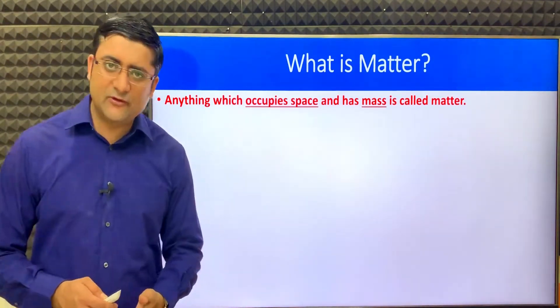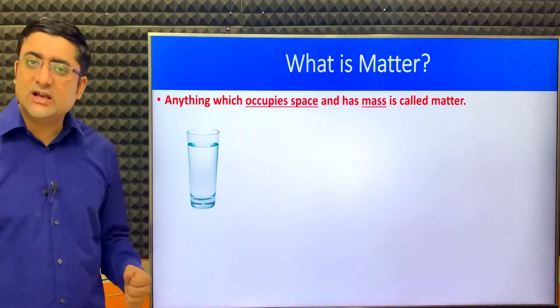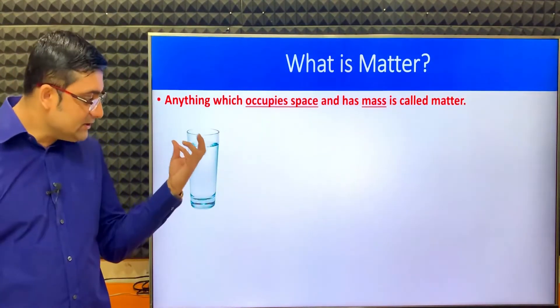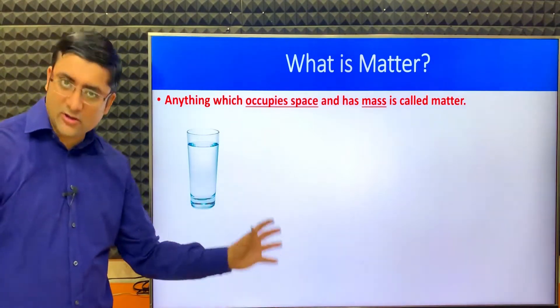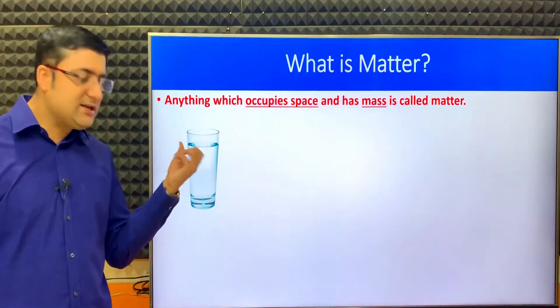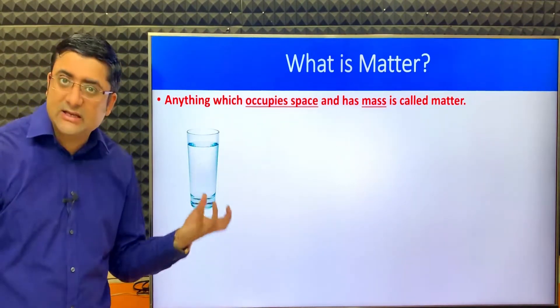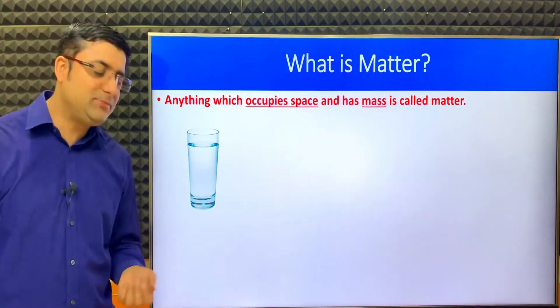Let's understand this with the help of a few examples. This over here is a glass of water. Does it occupy space? Yes — if I keep it over here it will occupy some space. Does it have mass? Yes. So it is matter. As simple as that.